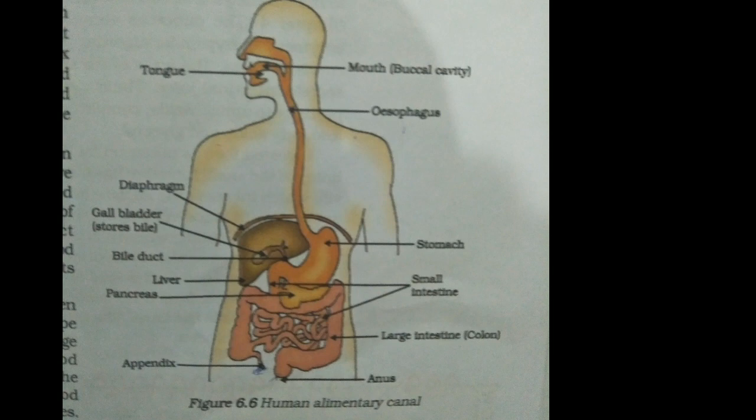First, we eat various types of food which has to pass through the same digestive tract. Naturally, the food has to be processed to generate particles which are small and of the same structure. This is achieved by crushing the food with our teeth.